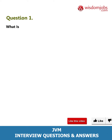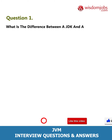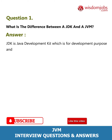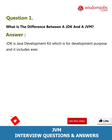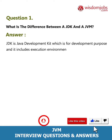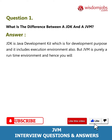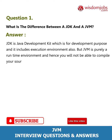Question 1: What is the difference between a JDK and a JVM? Answer: JDK is Java Development Kit, which is for development purposes and it includes an execution environment. JVM is purely a runtime environment, and hence you will not be able to compile your source files using a JVM.